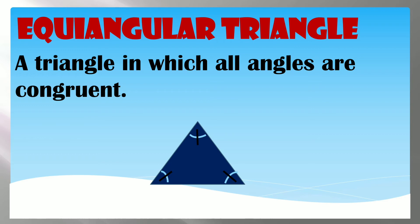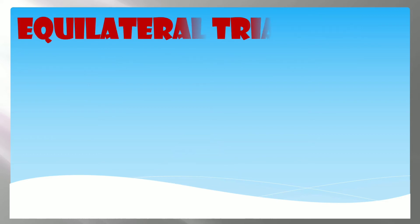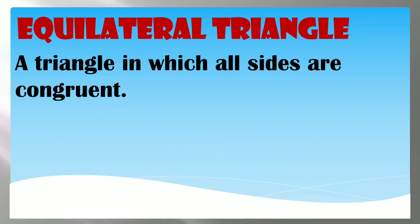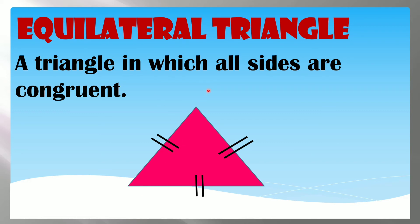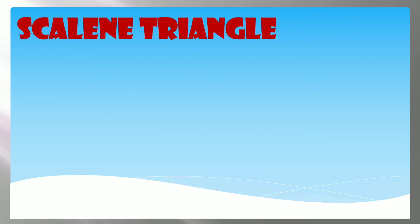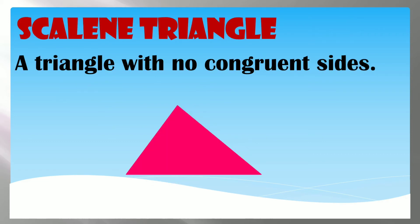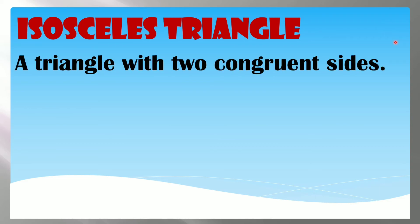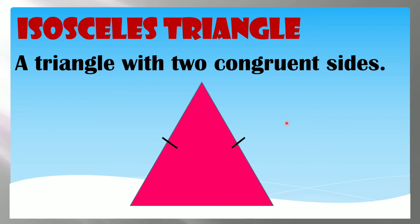Now let us look at the kinds of triangles based on their sides. An Equilateral Triangle is a triangle in which all sides are congruent. A Scalene Triangle is a triangle whose sides are all unequal. An Isosceles Triangle is a triangle with two congruent sides.